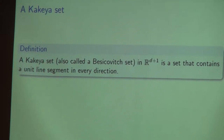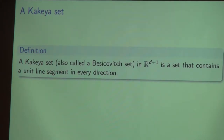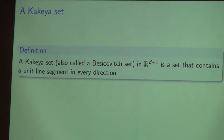I promised to talk about Kakeya-type sets, so a good place to start would be by recalling what the Kakeya set is. A Kakeya set — or Besicovitch set — is by definition one that contains a unit line segment in every direction. The study of such sets spans approximately a century, and it has been an intensely fruitful, if at times vexing endeavor. There are some long-standing open questions still in the field.